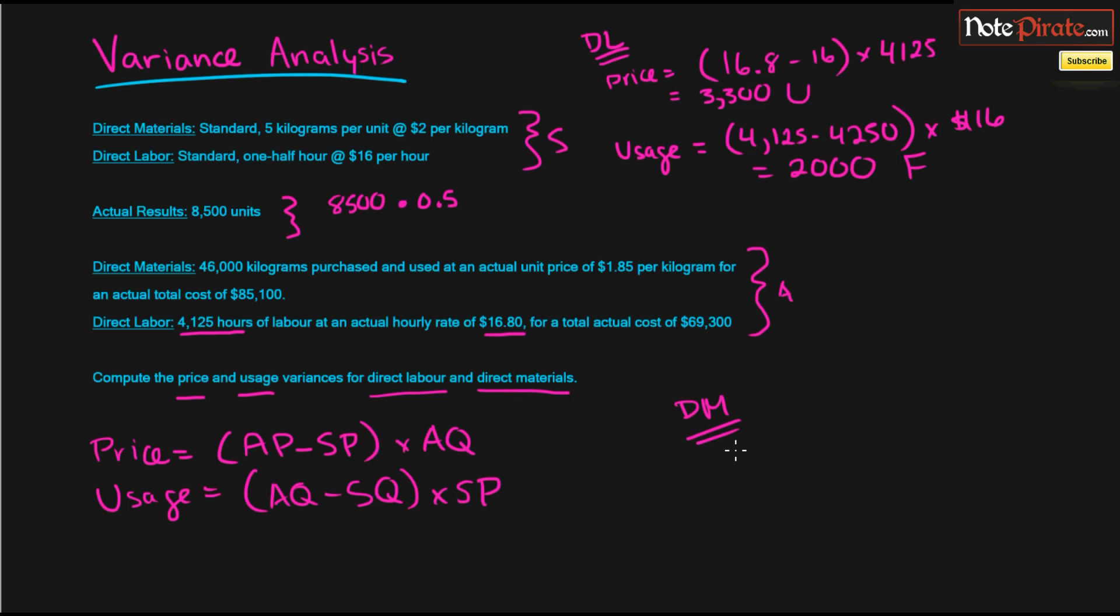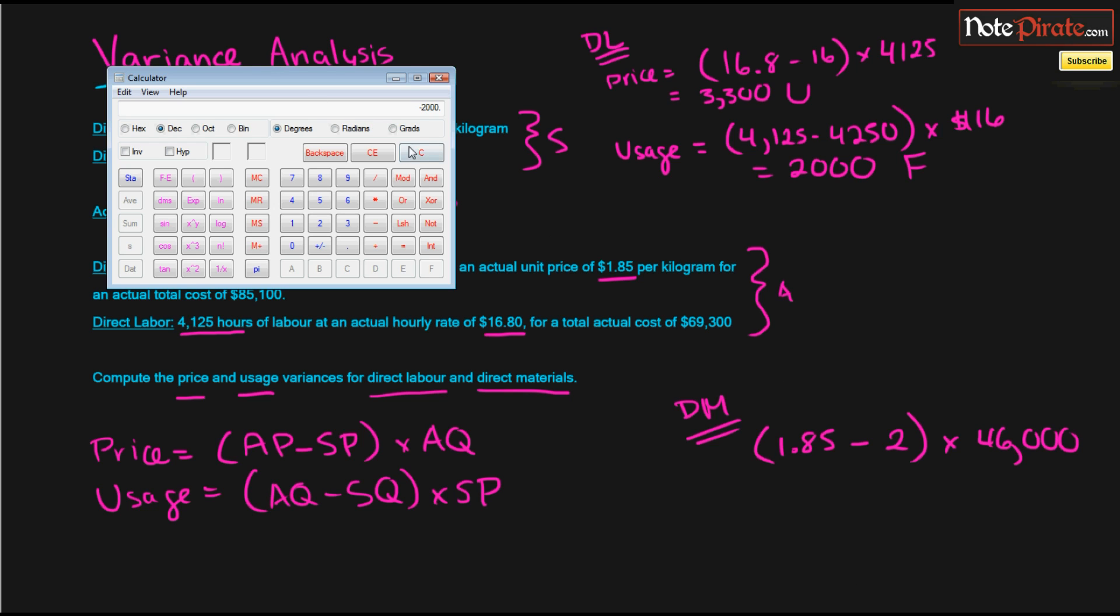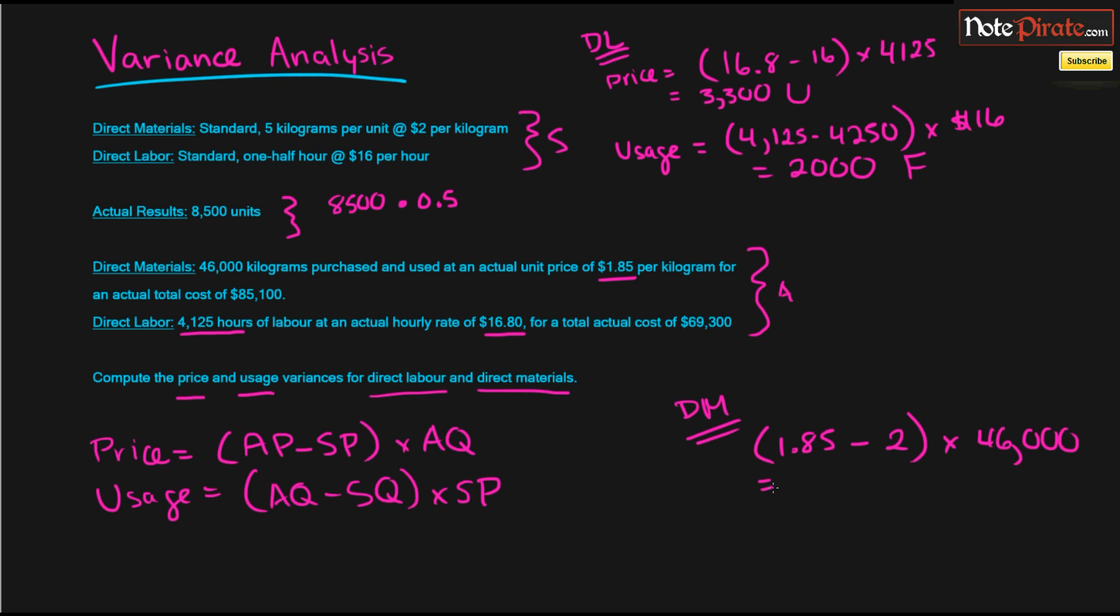Let's move on to direct materials. So it's the exact same thing. Price variance is going to be represented by actual price minus standard price. So we look for it right there, $1.85, subtract $2, and our actual quantity is represented by 46,000 kilograms. So we'll have a 15 cent difference times 46,000, and that is going to be a $6,900 favorable difference because our actuals were less than our budgeted. And that is our price variance for direct materials.